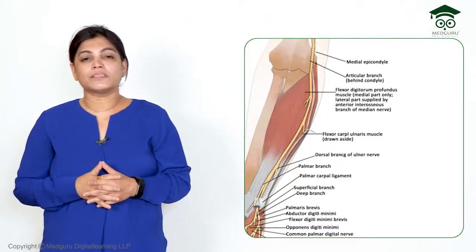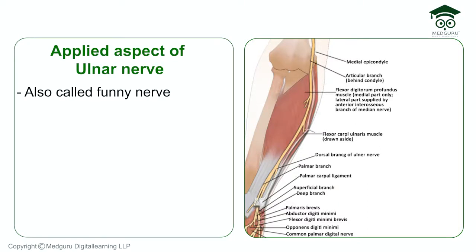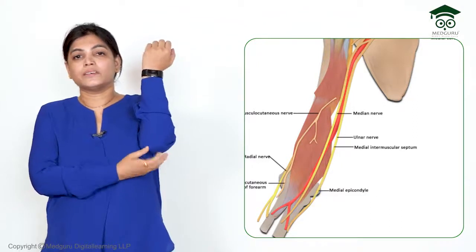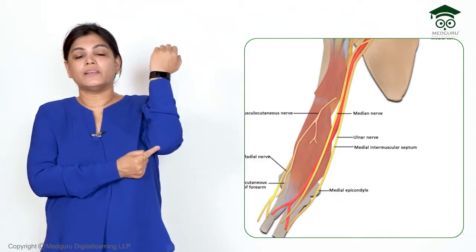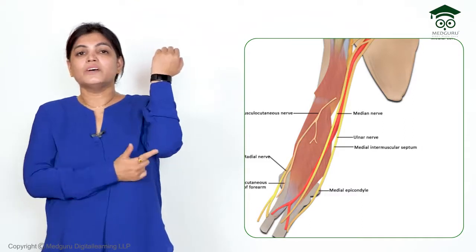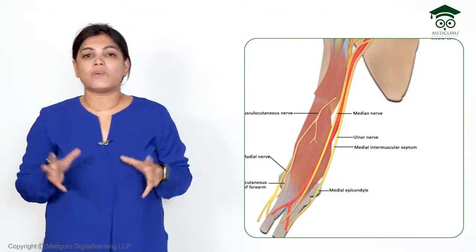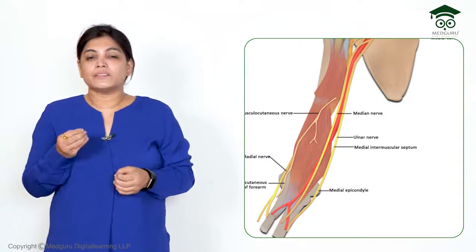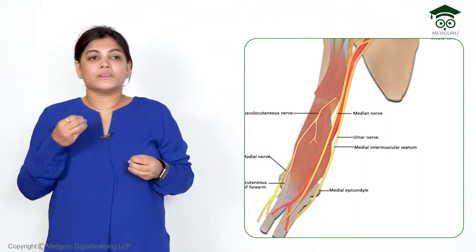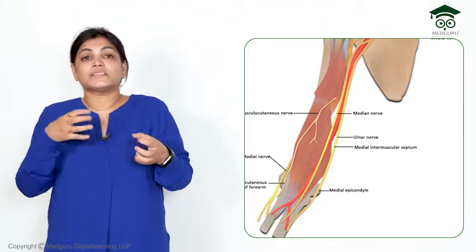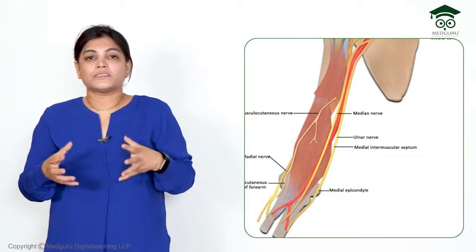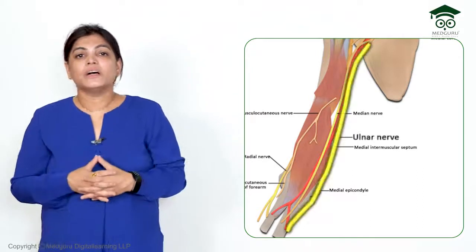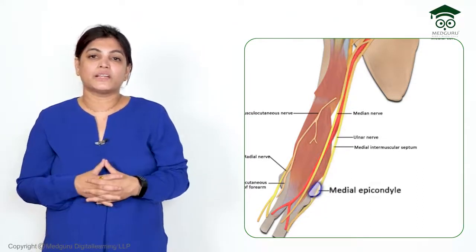The ulnar nerve is also called the 'funny nerve.' Behind the medial epicondyle, the ulnar nerve lies somewhat superficially. If it gets stimulated there — such as when you hit your elbow — you feel a tingling sensation. This tingling from compression of the ulnar nerve behind the medial epicondyle is the reason it is called the funny nerve, and the lower end of the humerus is called the 'funny bone.'